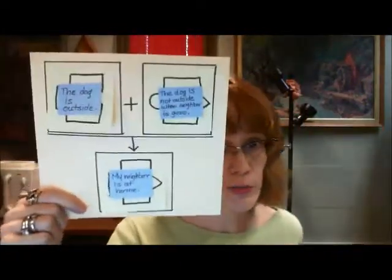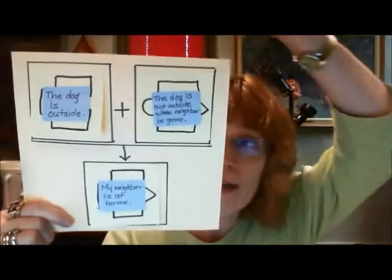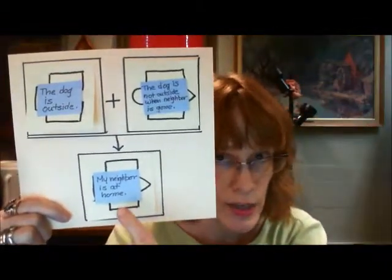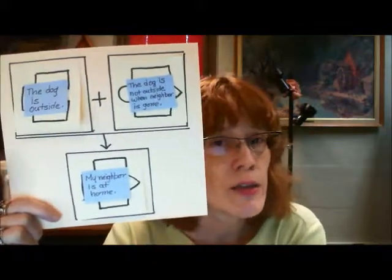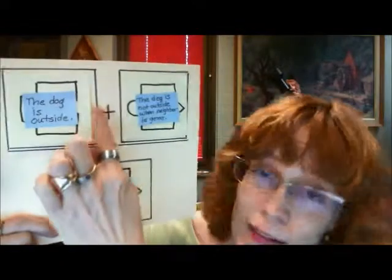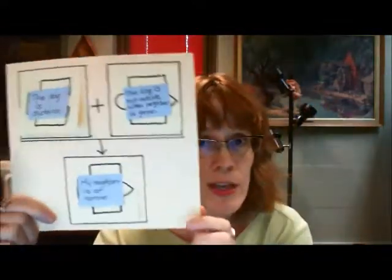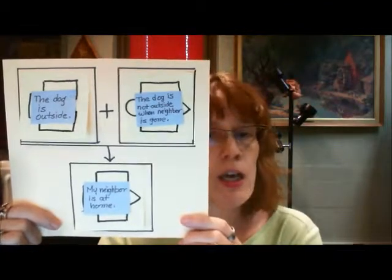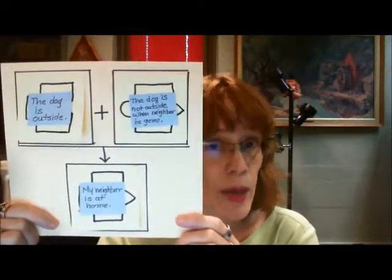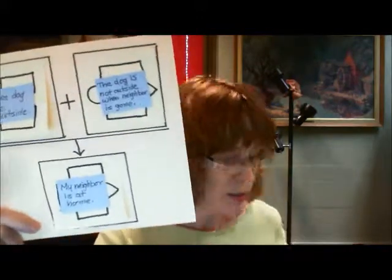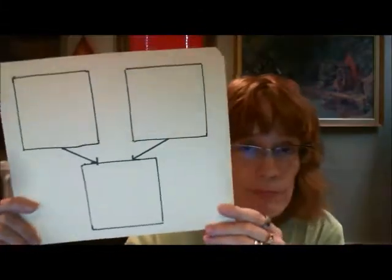The third of the three ways is we still have two ideas that are related as reasons for a third. But no longer are they dependent reasons. They don't need each other in this way. So just think for a bit about how you might represent that graphically. Two ideas, each of them independently supporting a third. Here is how we can do it. There we have it.